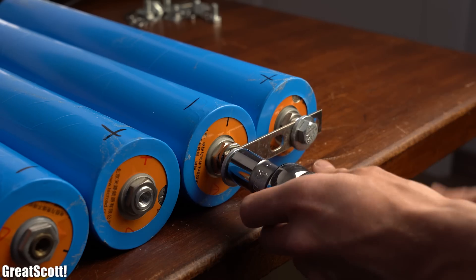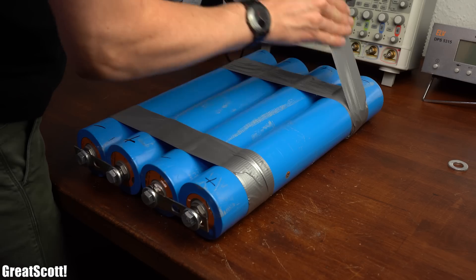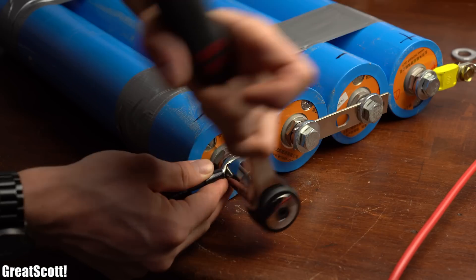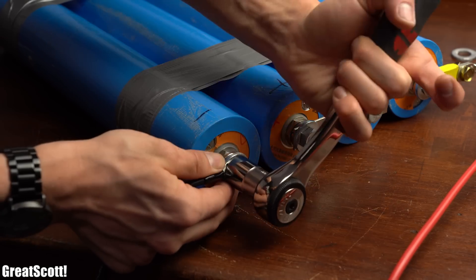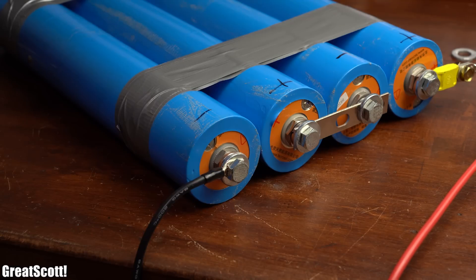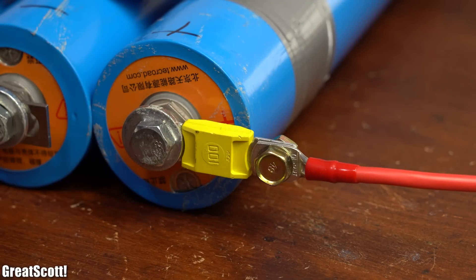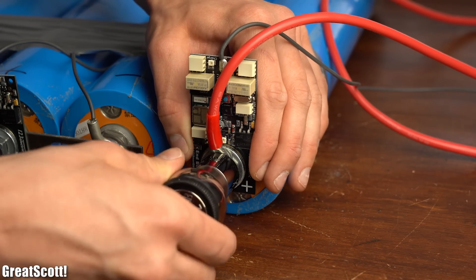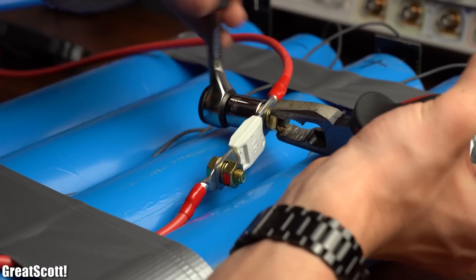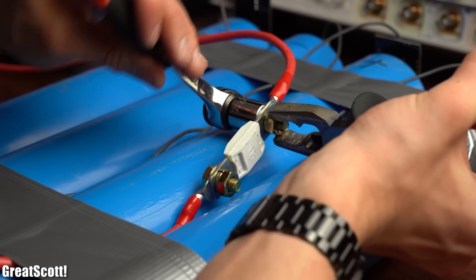Afterwards I reassembled the battery pack, added some duct tape and mounted some proper heavy duty power wires to its plus and minus terminal along with a suitable fuse. It is noteworthy though that I later had to reposition the fuse since it was getting in the way of the BMS system.